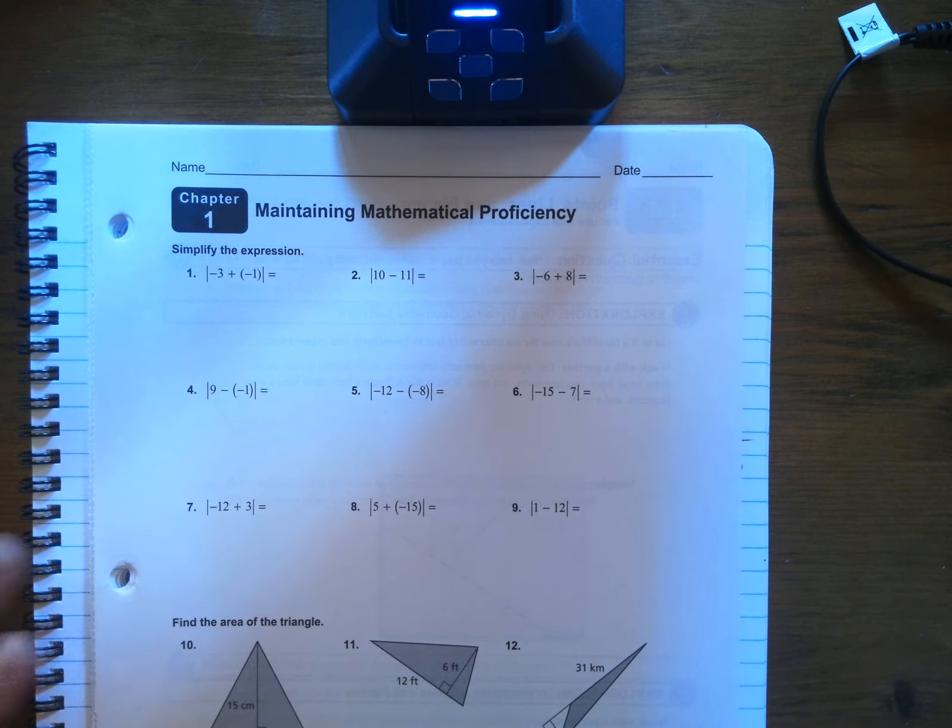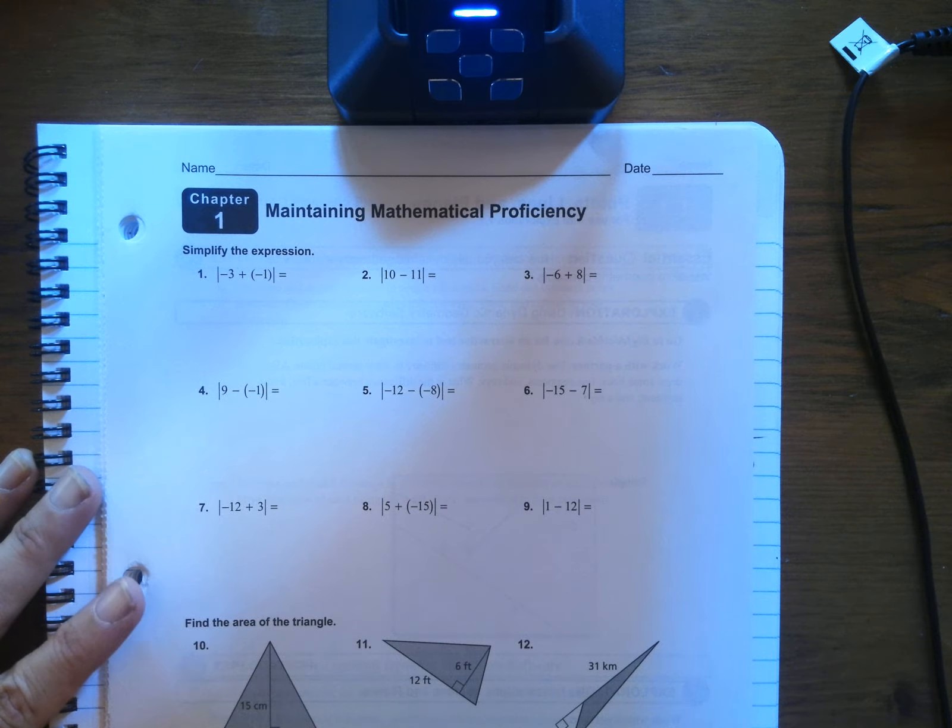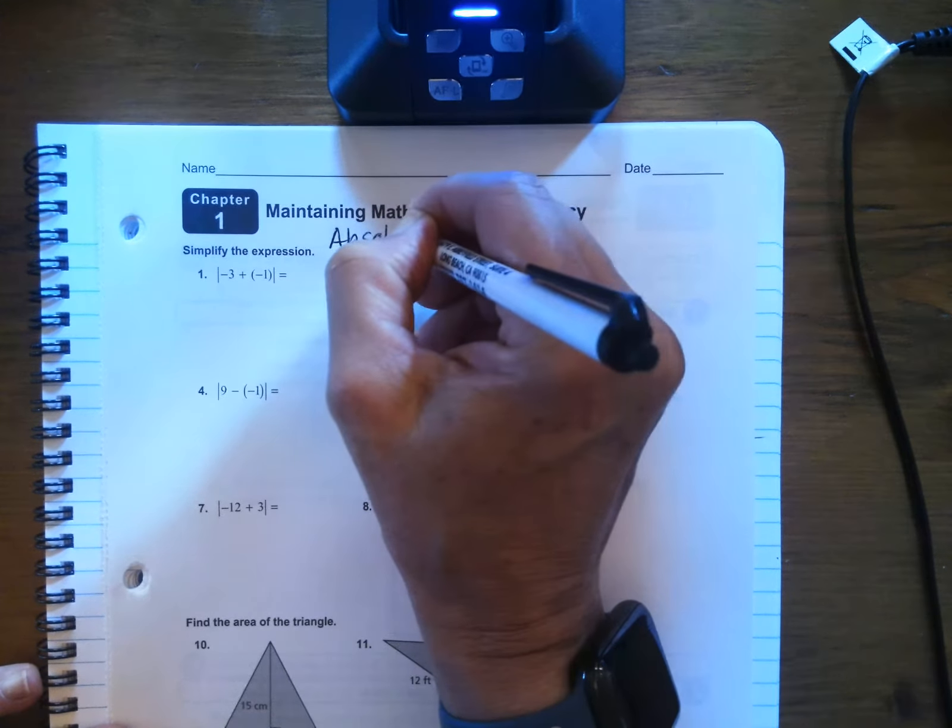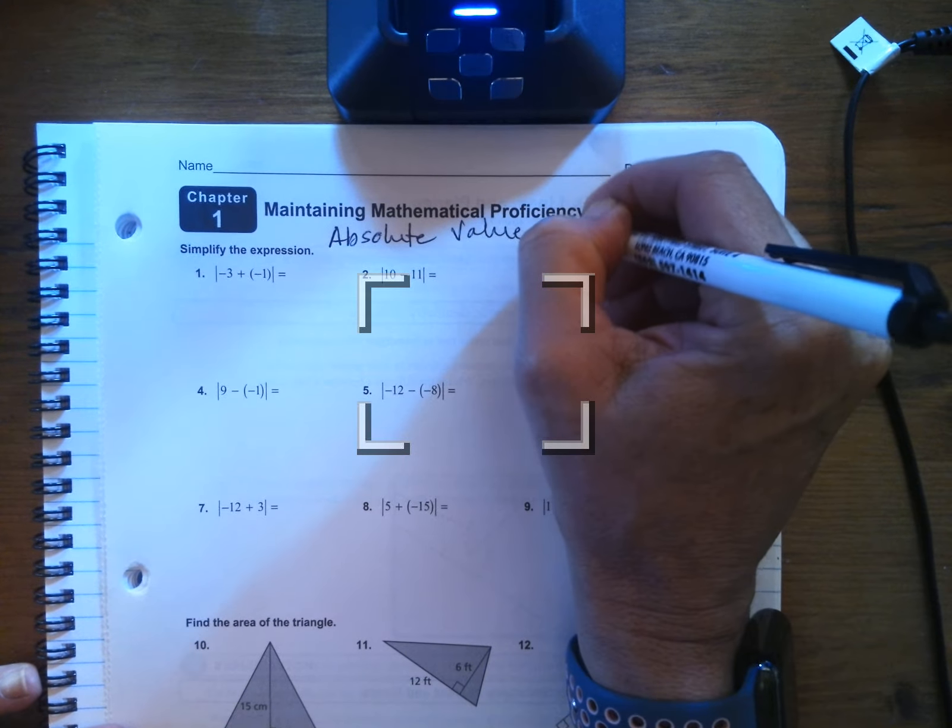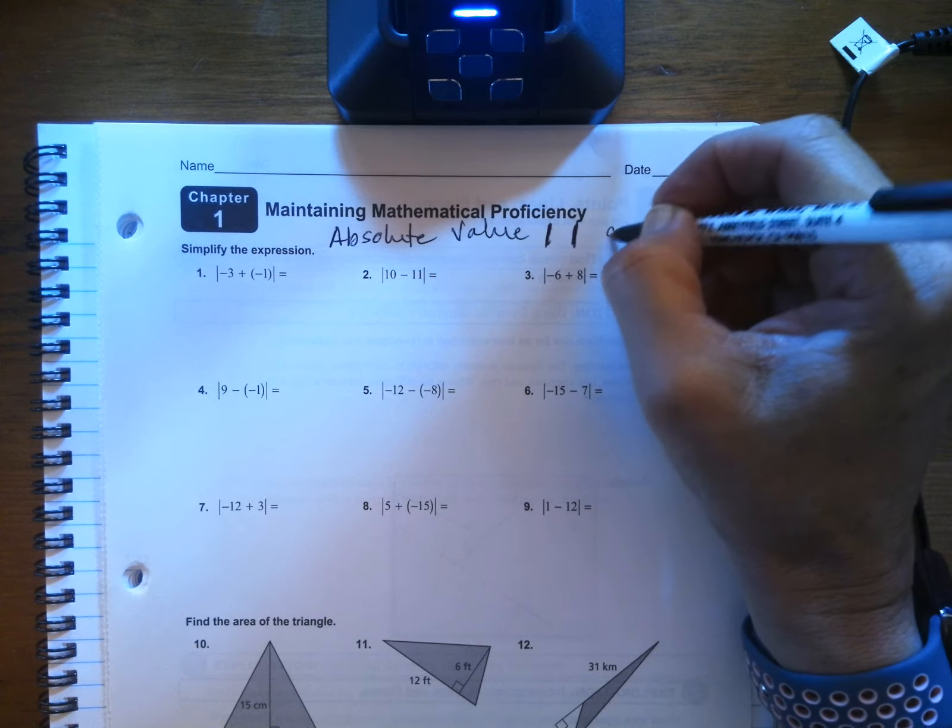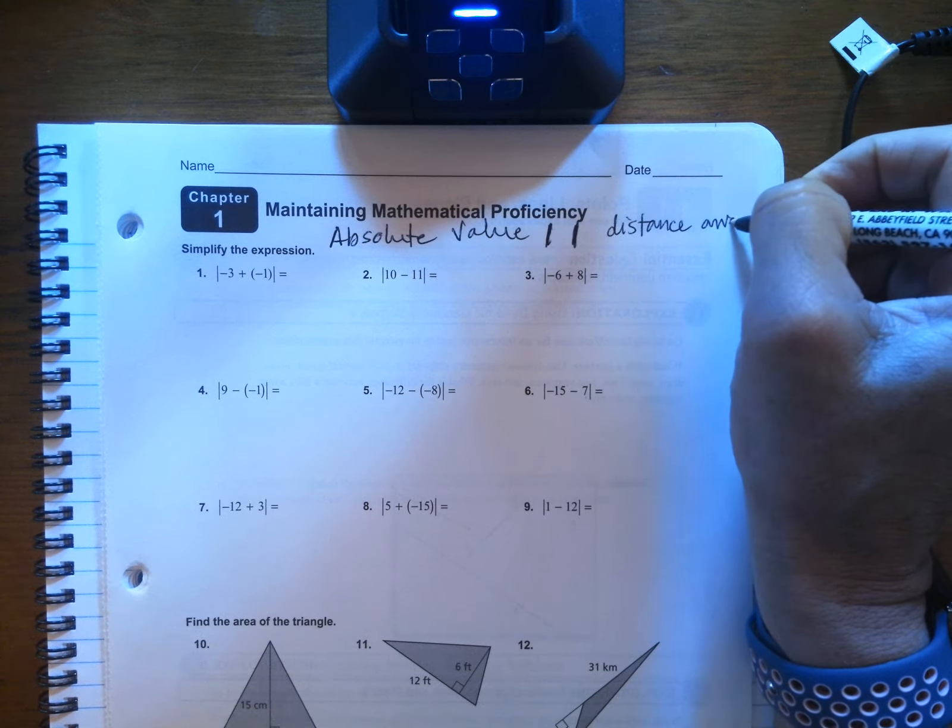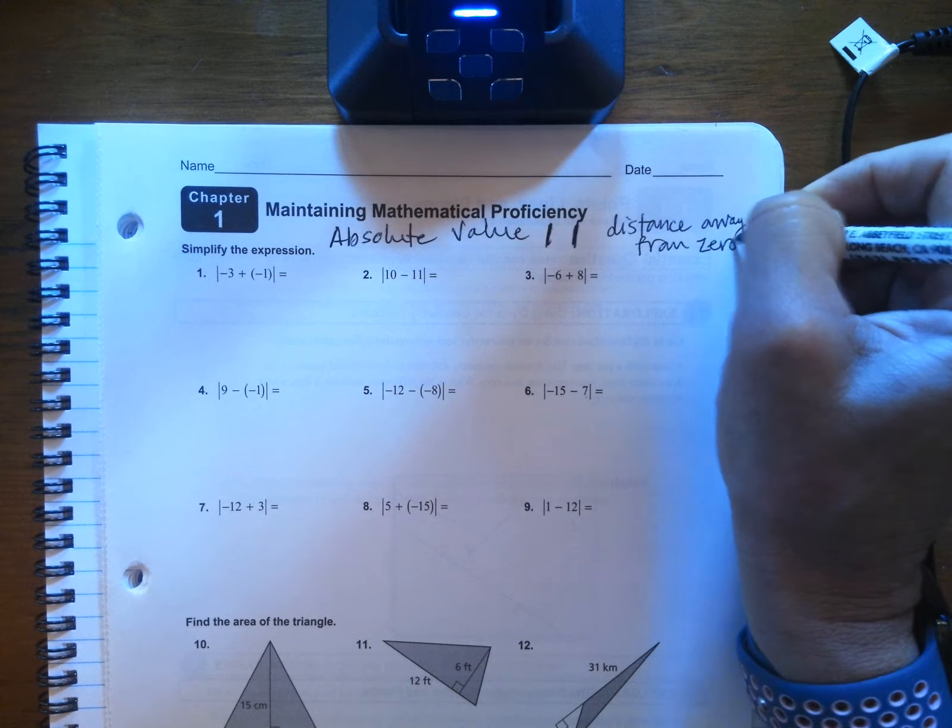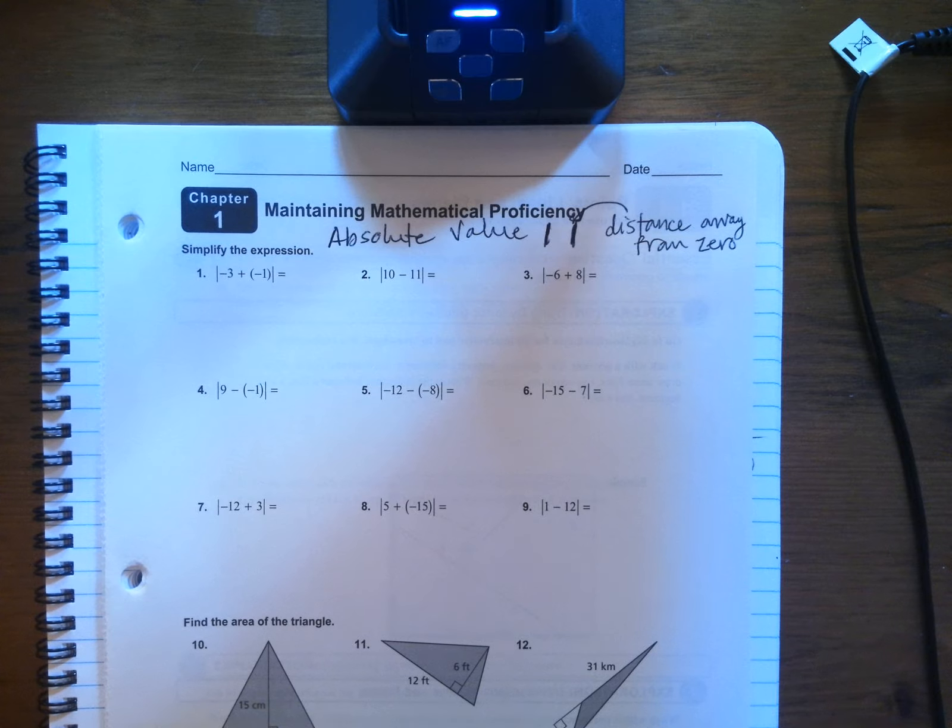Hi, you guys. One of the first things we're going to review is from Algebra 1, the concept of absolute value. So whenever you see these symbols, the ones that are straight up and down, they simply mean the distance away from zero. A distance is always positive, whether it's a positive number or a negative number. Just remember, this symbol means distance away from zero.